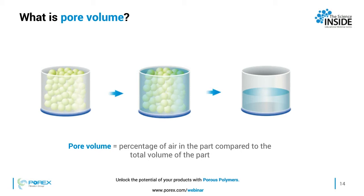It's quite common for a porous plastic part to have a pore volume of around 30 percent — meaning 30 percent of its shape by volume can hold liquid, gases, or some other substance.